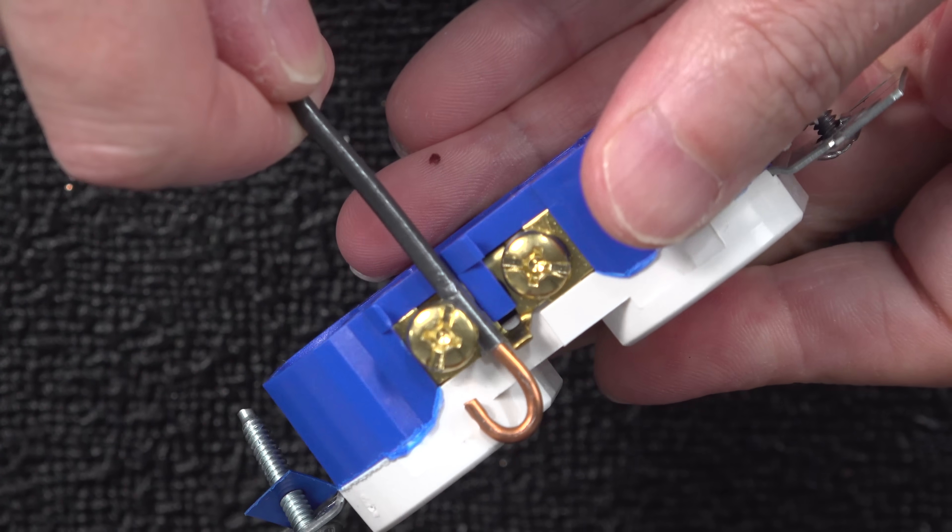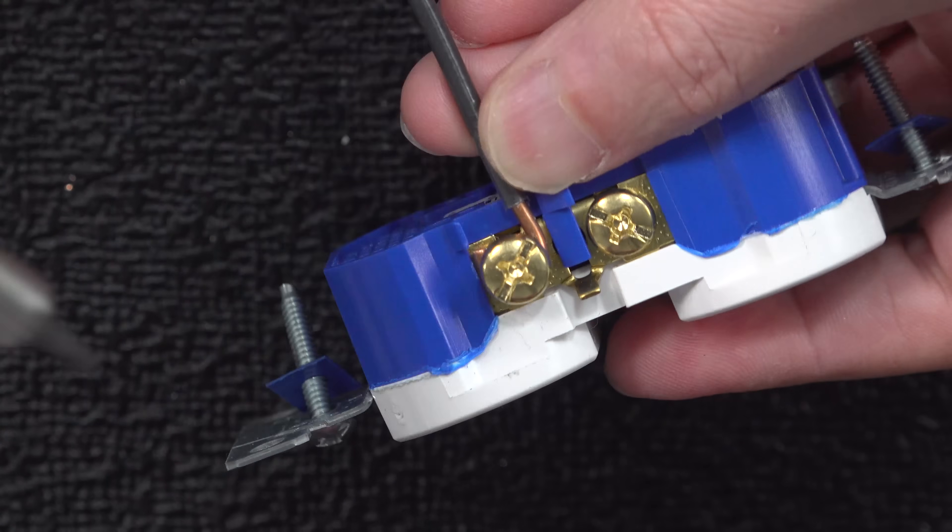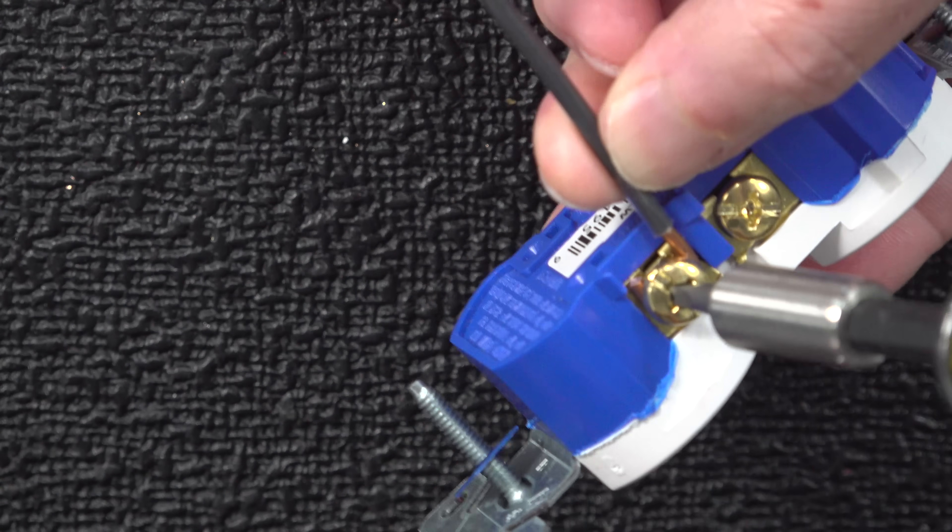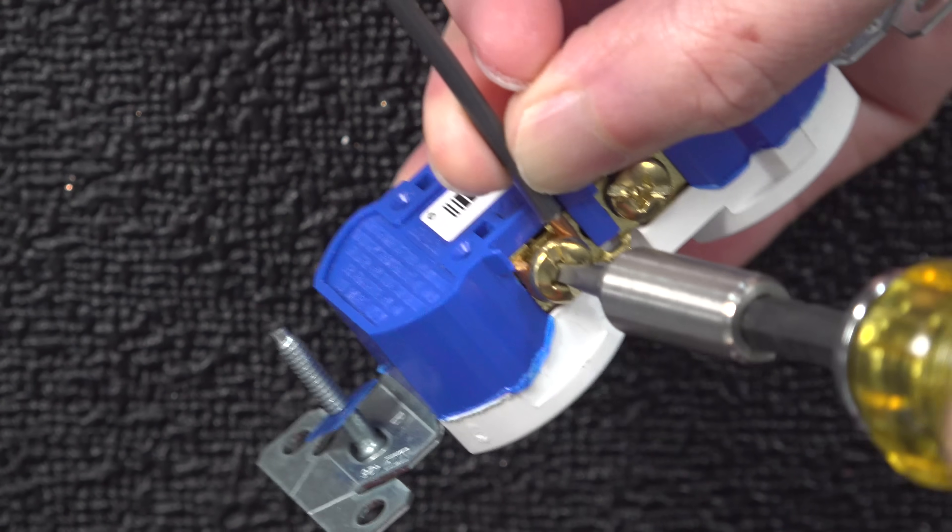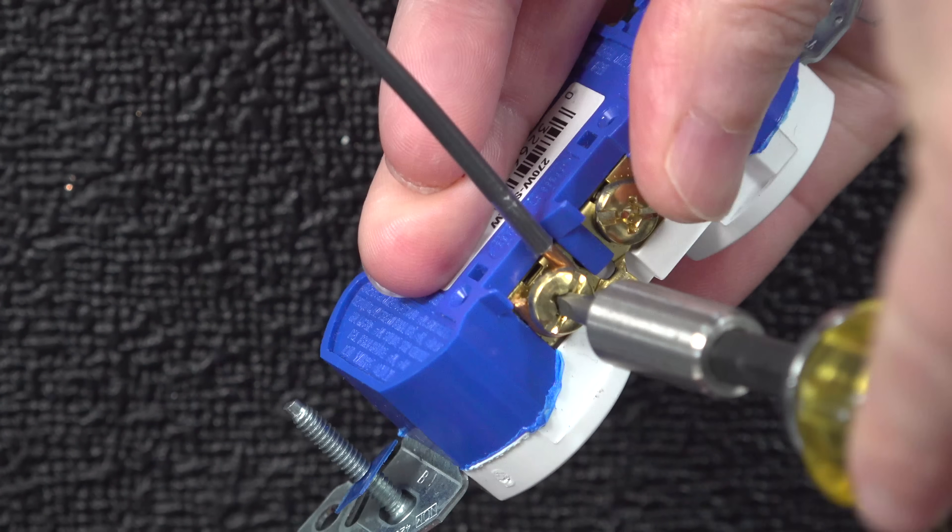The correct amount of insulation you want to remove is three quarters of an inch if you're going to be making a hook. Once you do that, you'll be able to form a hook that's going to fit properly. You won't have too much wire sticking out the end and you won't have too little so that you get any insulation underneath that screw.